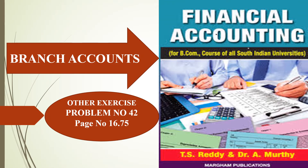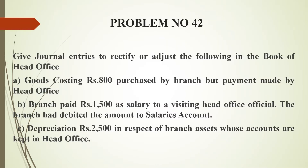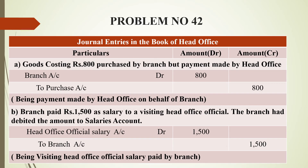Welcome to VL Academy. In this video, we cover branch accounts exercise problem number 42, which is on page 16. In the problem, we have adjustment entries, and in the head office we have three transactions. The first adjustment entry is: goods costing rupees 800 purchased by branch but payment made by head office.